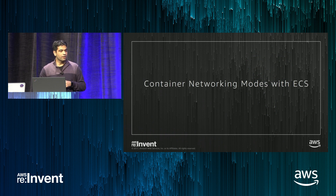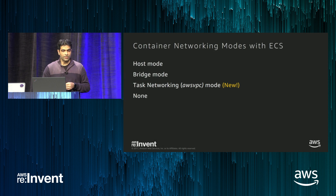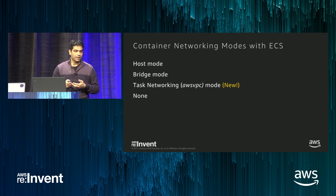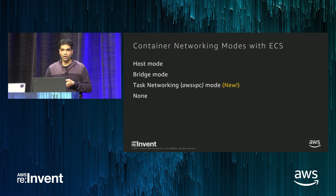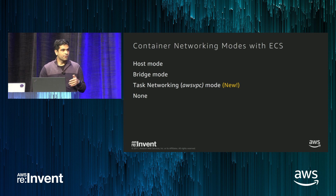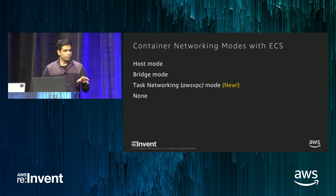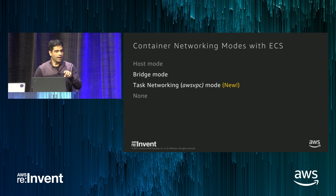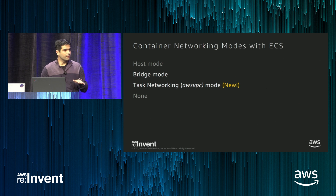Let's talk about the container networking modes with ECS. As I mentioned, there's bridge mode and task networking mode. There are two additional modes: host mode, where containers use the host network stack and all host interfaces are available to the container—though this hasn't been popular from a network isolation standpoint—and none mode, where no networking is needed because you're writing something locally. I'll focus only on bridge mode and task networking mode, as these are the dominant ways of deploying and networking containers.